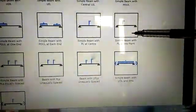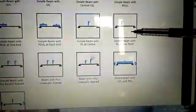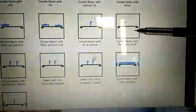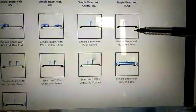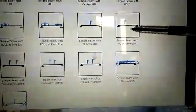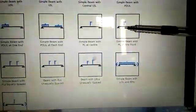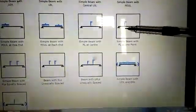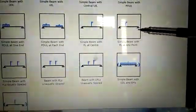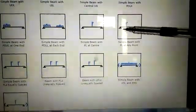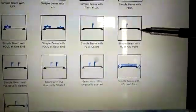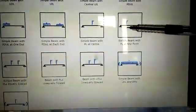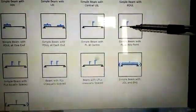This is also a beam where point load is applied, but this load is not applied at the center. It is applied at some distance of beam length. Suppose this distance is small a, this distance is small b. So this type of loading can also be there.